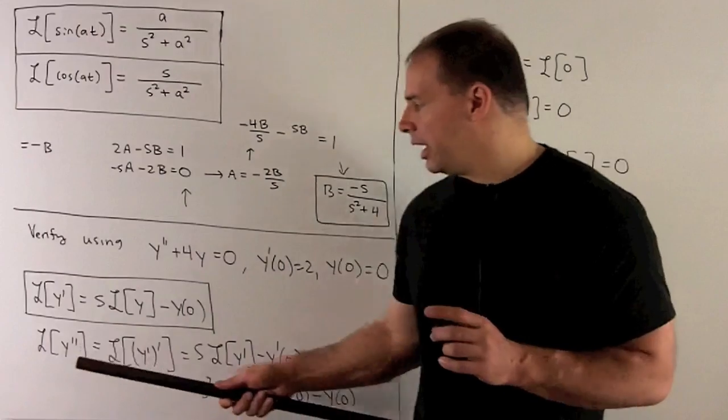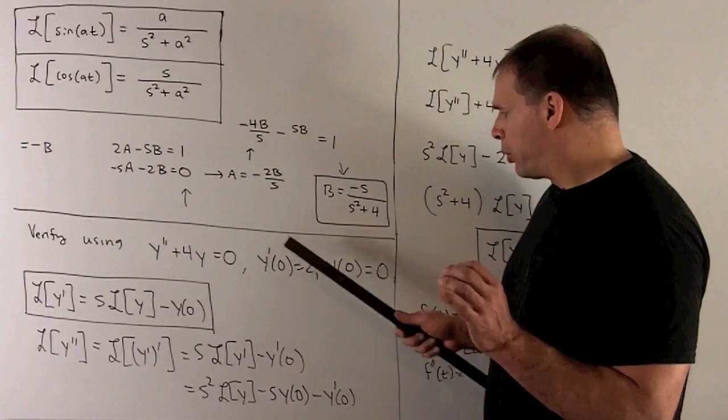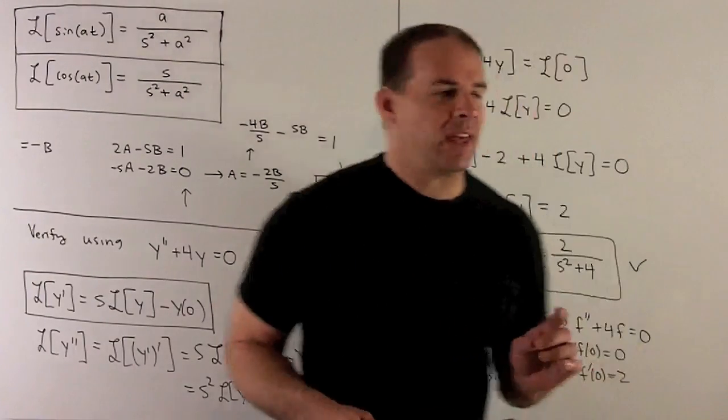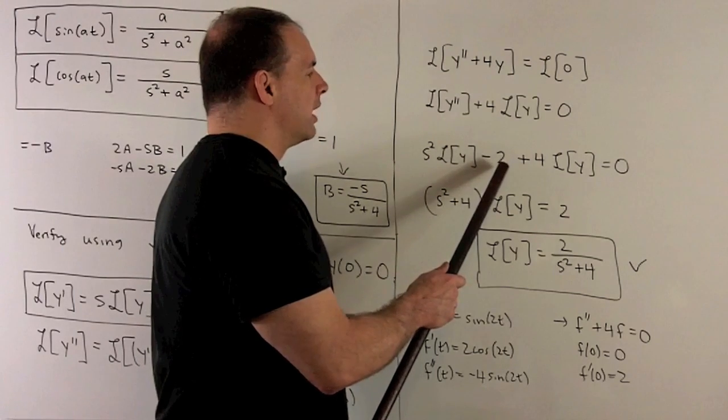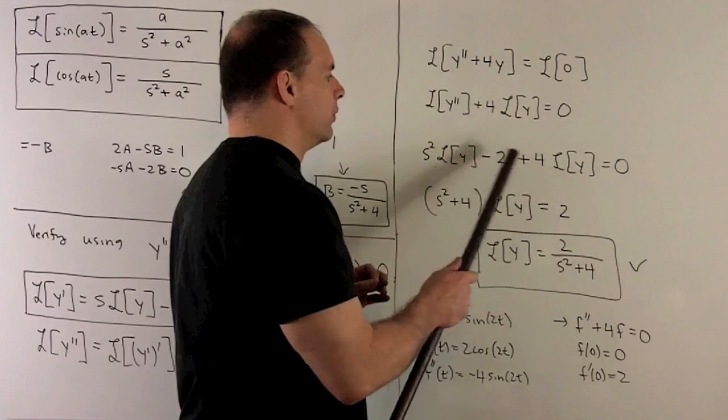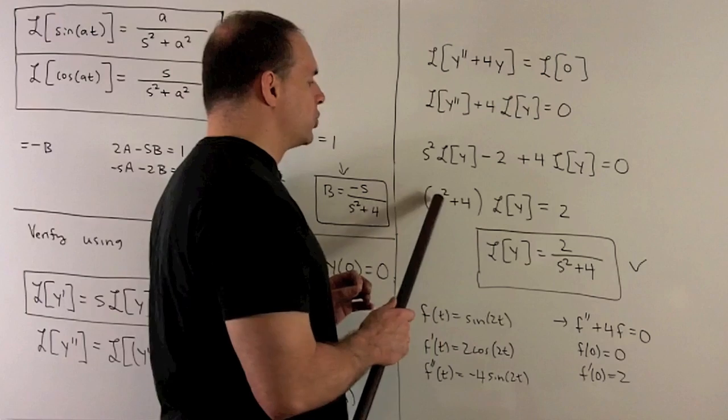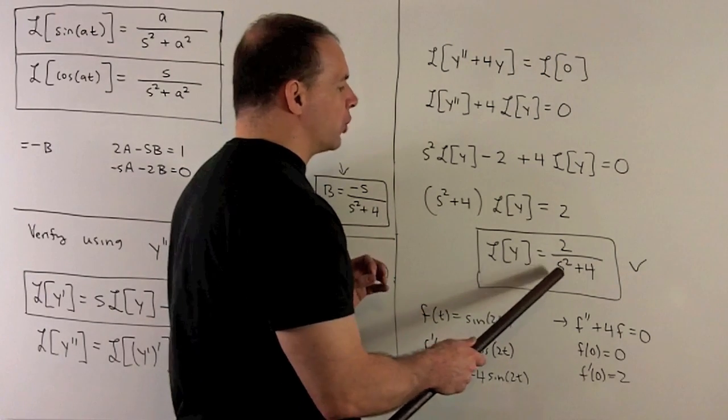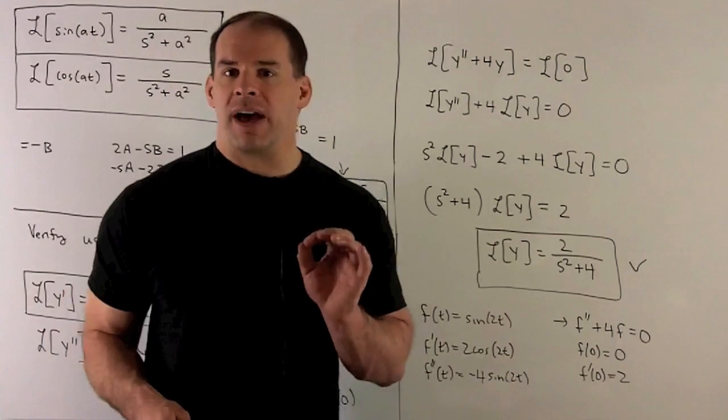Using my formula here for y double prime, what's going to come out? We know y prime at 0 is going to be 2, y of 0 is going to be 0. So, I'm going to be left with s squared L of y minus 2. And then we have plus 4 times Laplace transform of y. Move it to the other side. We're left with an s squared plus 4 in front of our Laplace transform. So, if I divide, that gives us our Laplace transform. You'll note, this agrees with our original answer. So, that verifies our work.